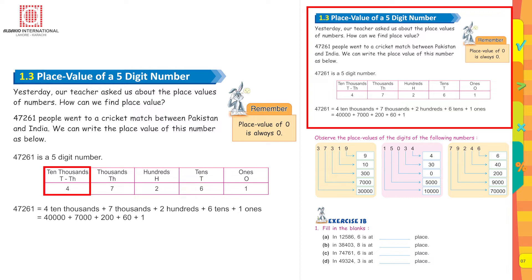When you write, you write from the right-most side. When you start reading, you read from the left-most side: forty-seven thousand two hundred and sixty-one. Here there are four ten-thousands, seven thousands, two hundreds, six tens, and one one. This equals forty thousand plus seven thousand plus two hundred plus sixty plus one, so we read it as forty-seven thousand two hundred and sixty-one.